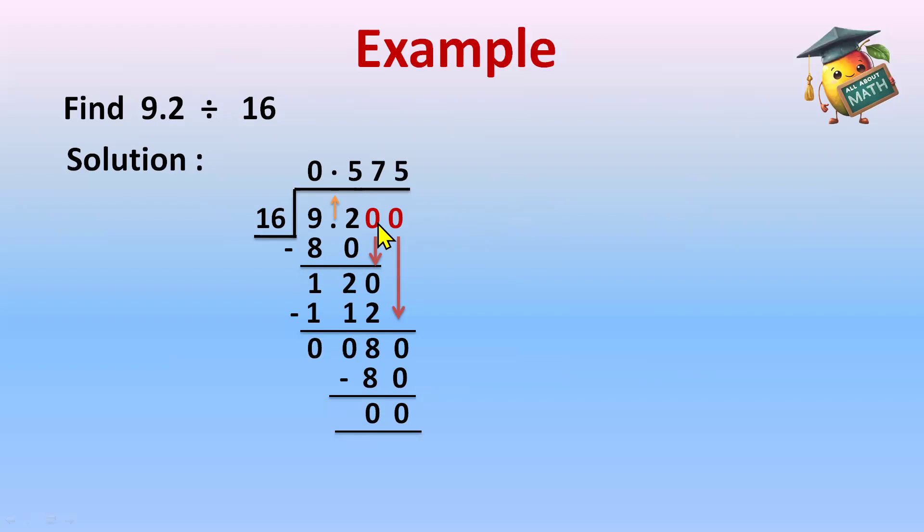Now, we will not add more further 0s. So, we have our answer 0.575. The dividend in this case is 9.2 or 9.200 because both are the same thing. Divisor is 16, quotient is 0.575, and remainder is 0.